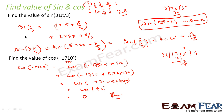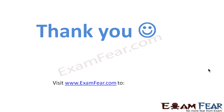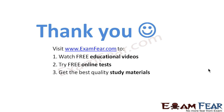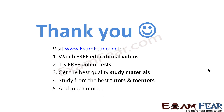To summarize: sin(k·2π + x) equals sin(x); similarly cos(k·2π + x) equals cos(x); and for tan, tan(nπ + x) equals tan(x). Visit examfear.com to watch free educational videos, try free online tests, get the best quality study materials, and study from the best tutors and mentors. Thanks once again.